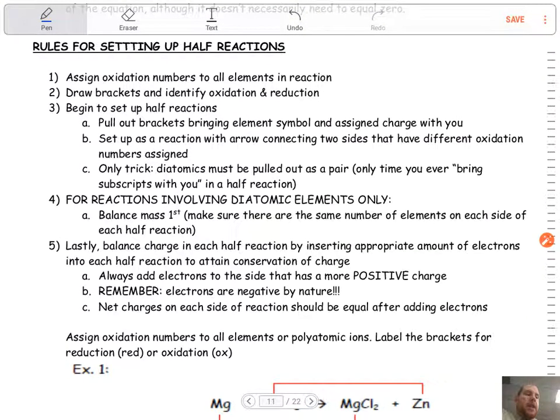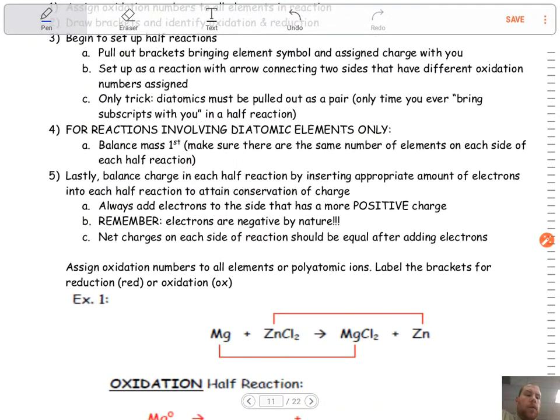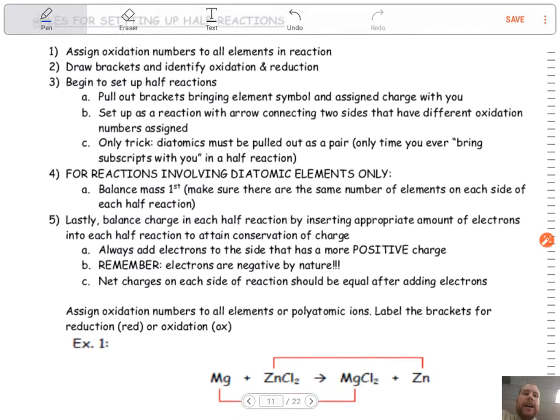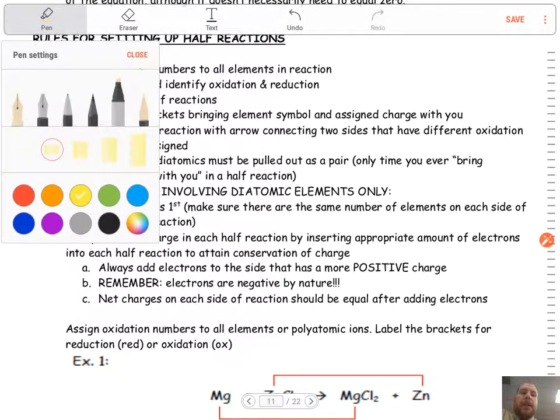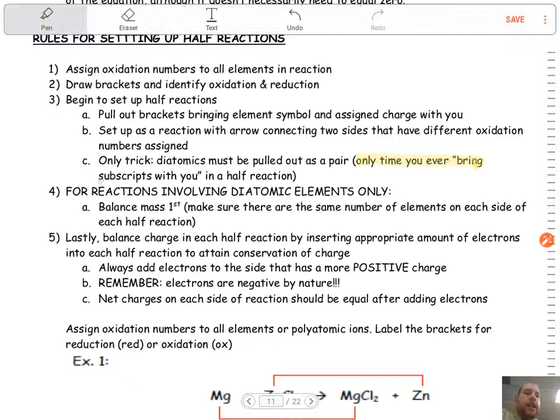Like with oxidation numbers, we have rules for setting up half reactions. First step, assign those oxidation numbers. This whole idea of drawing brackets, you don't need to worry about it. If it helps you, I'm not going to necessarily do that. The brackets are shown here showing what's doing it so you can identify oxidation and reduction. Then you're going to begin to set up the half reactions. Pull out the brackets, bring in the element symbol and assigned charge with you. Set up a reaction with the arrow connecting the two sides. Only trick: diatomics must be pulled out as a pair. The only time you ever bring subscripts with you.